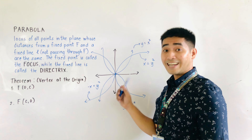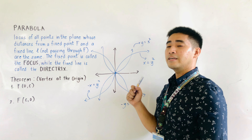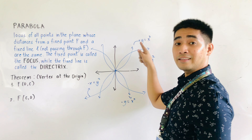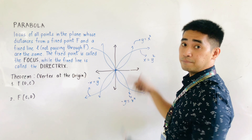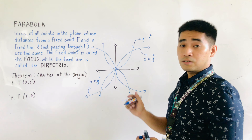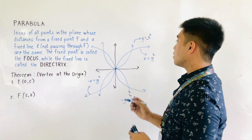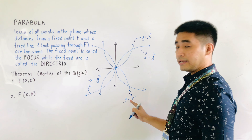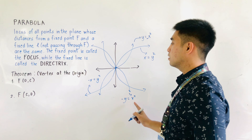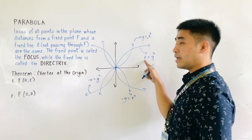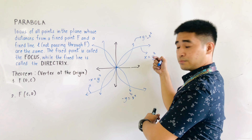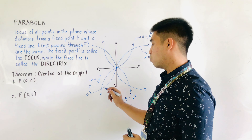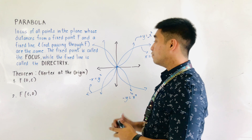So this will be our guide to know the different equations of a parabola. If a parabola is opening upward, that is y is equal to x squared. If opening downward, that is negative y is equal to x squared. For the parabola opening to the right, that becomes x is equal to y squared. And for the parabola opening to the left, that is negative x is equal to y squared.